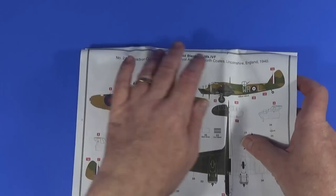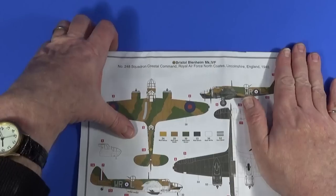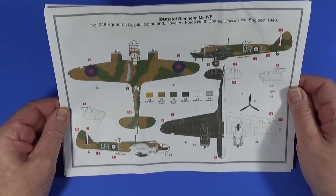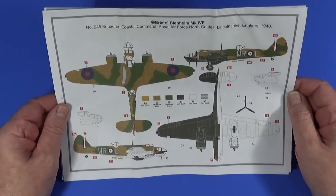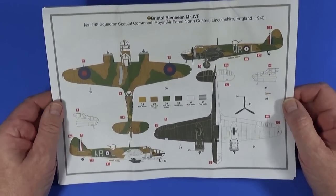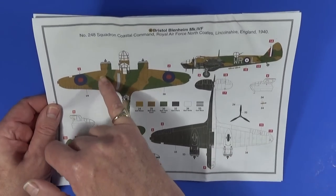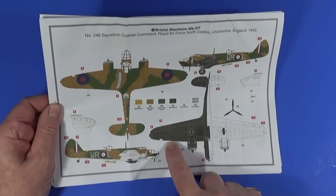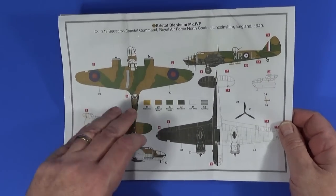The layouts and two schemes. The first one here is an aircraft of 248 Squadron Coastal Command in 1940. This is the classic RAF daytime scheme with matte dark earth, matte dark green, and the black and white undersides. A nice scheme.